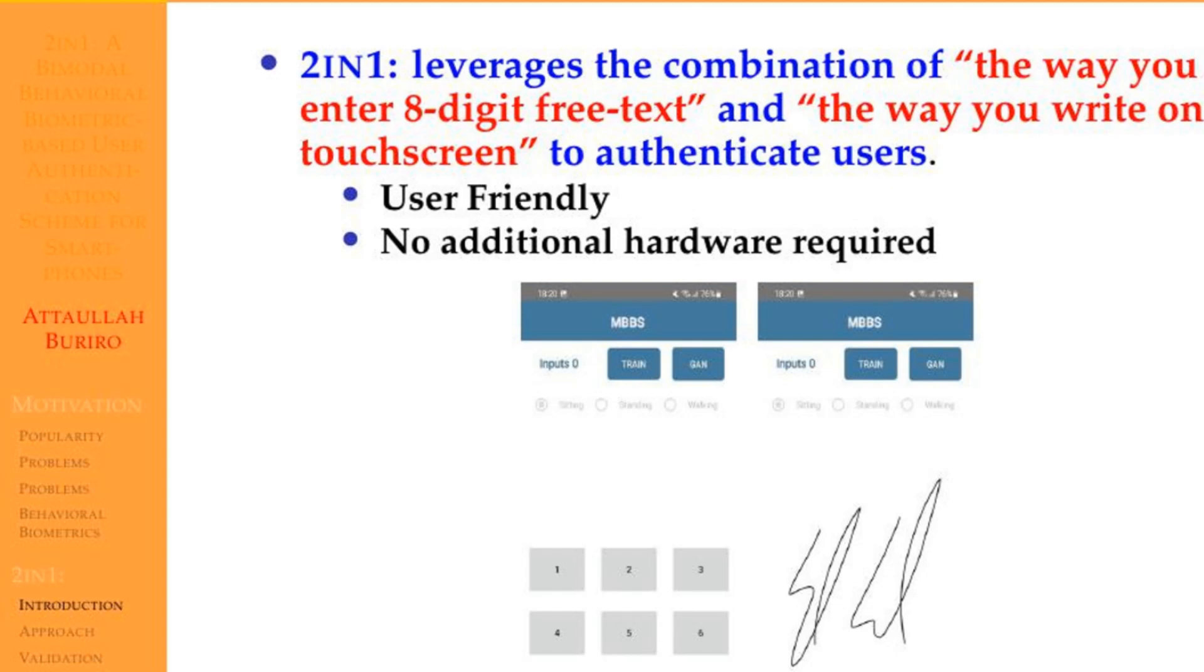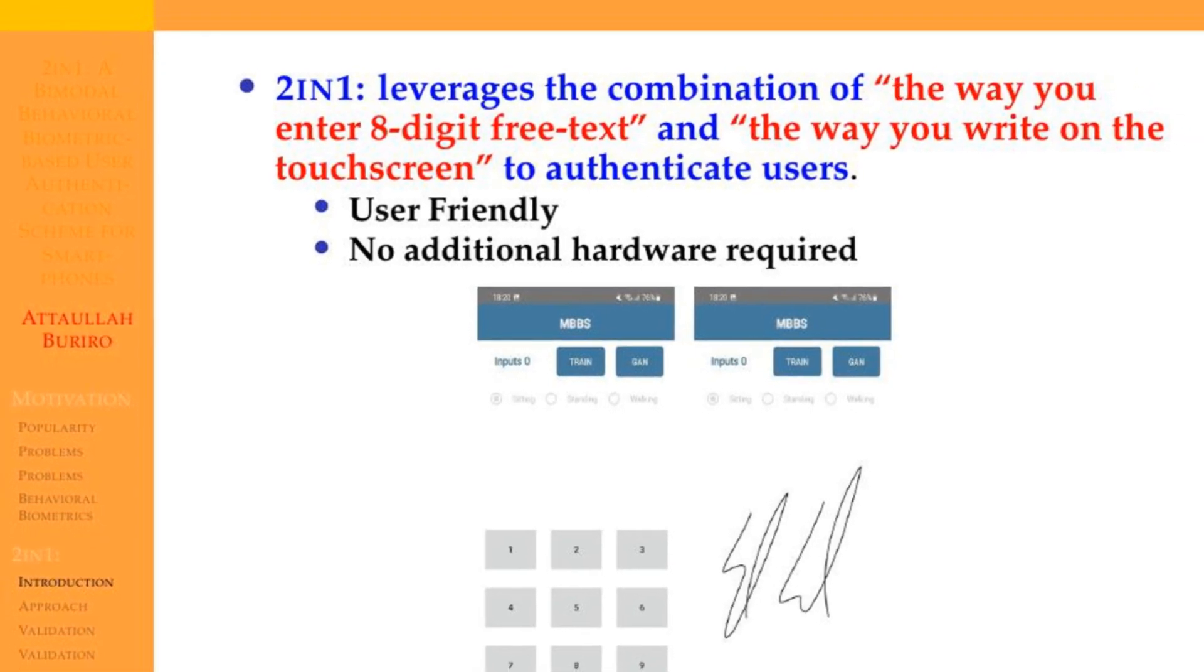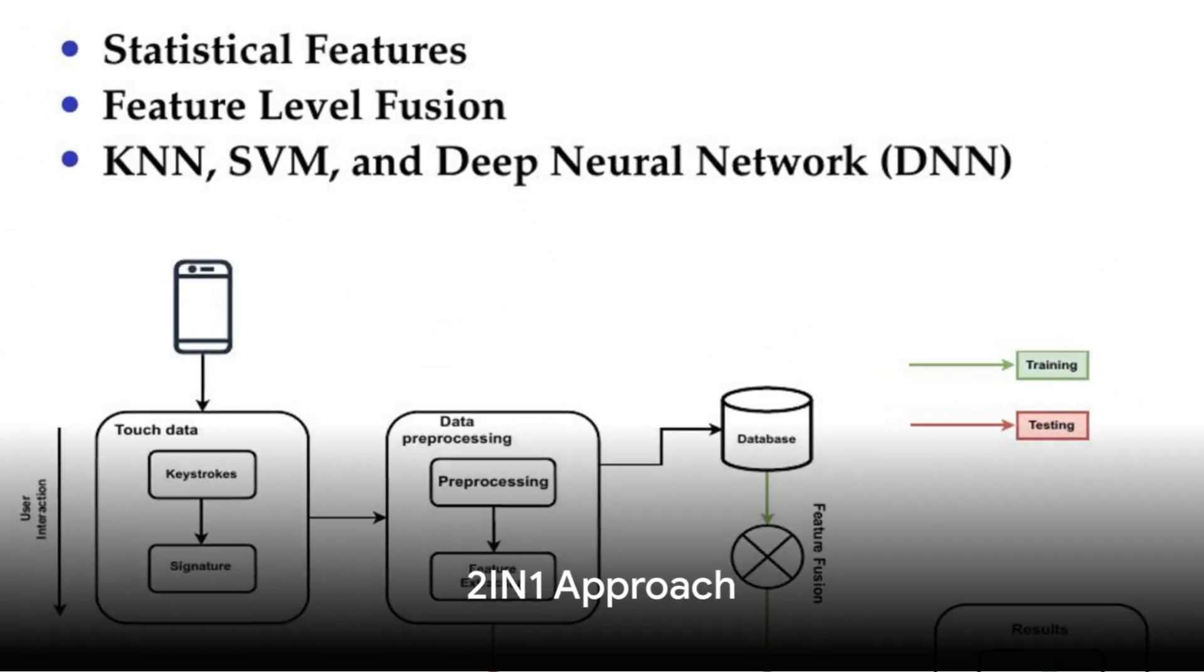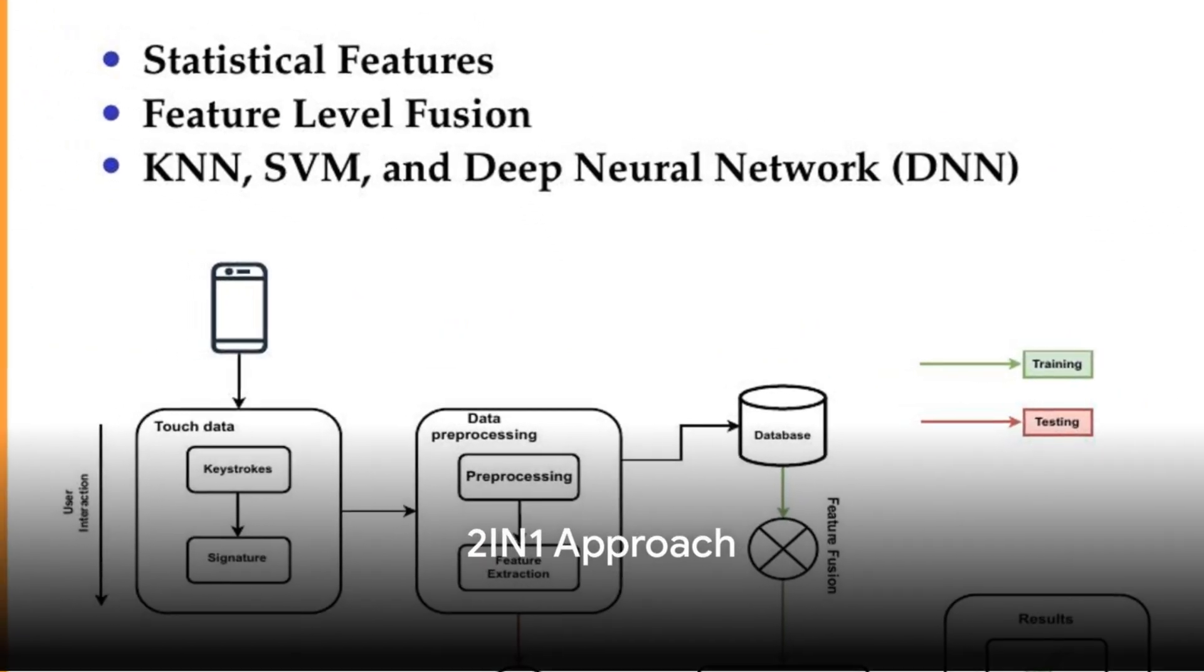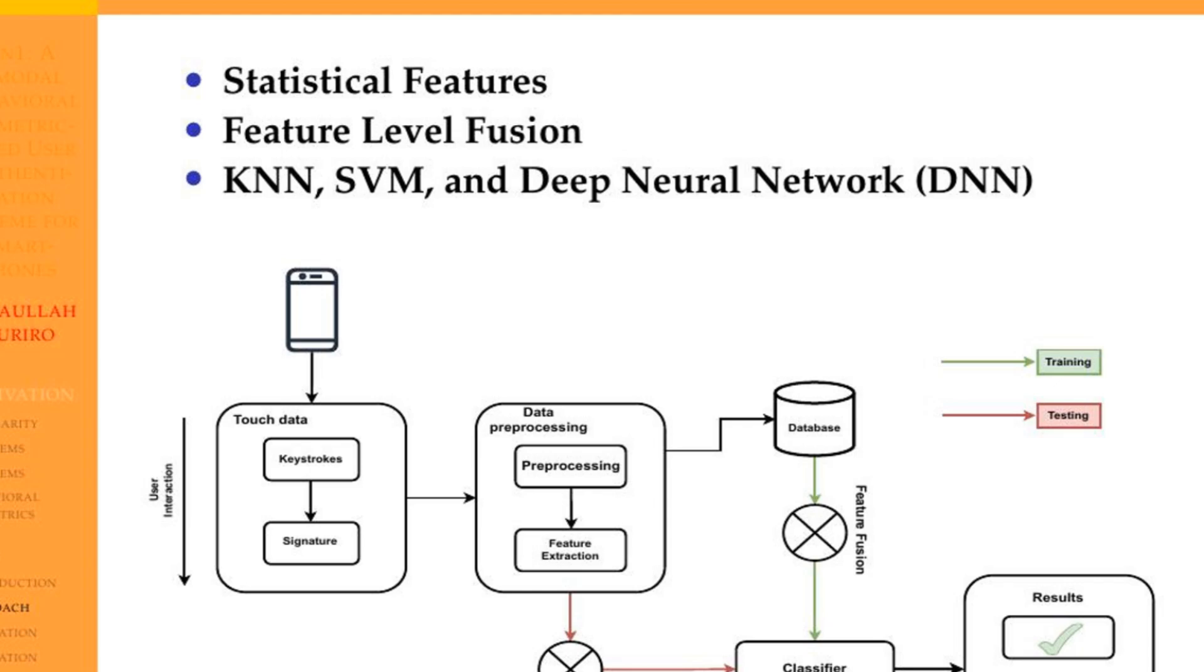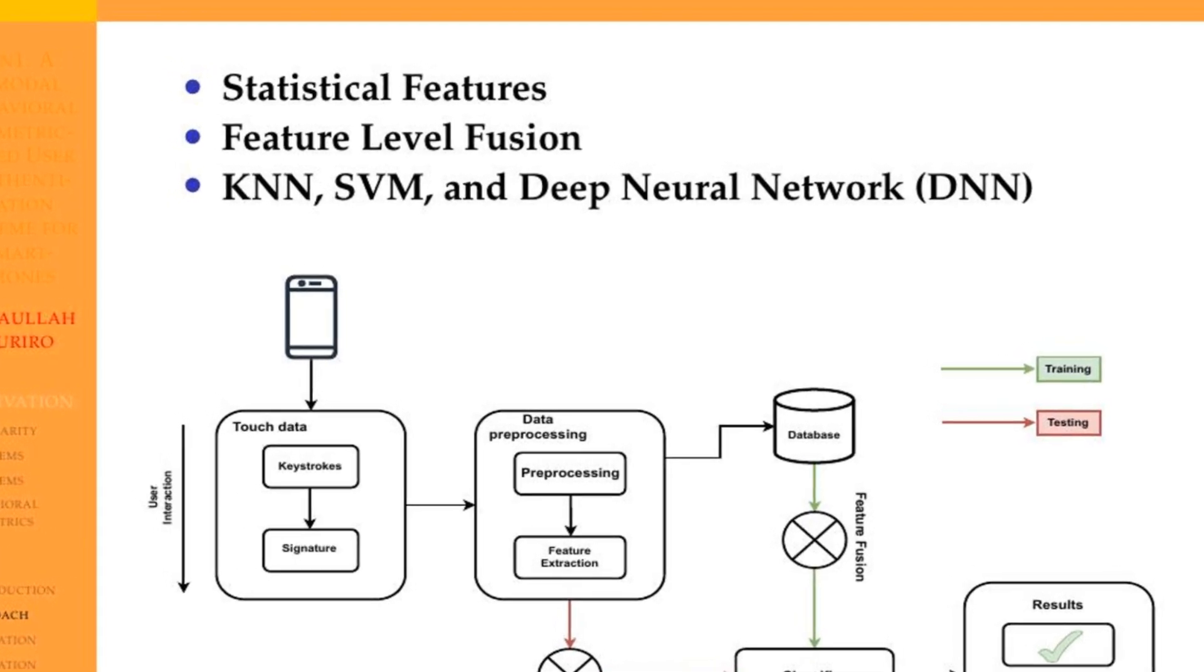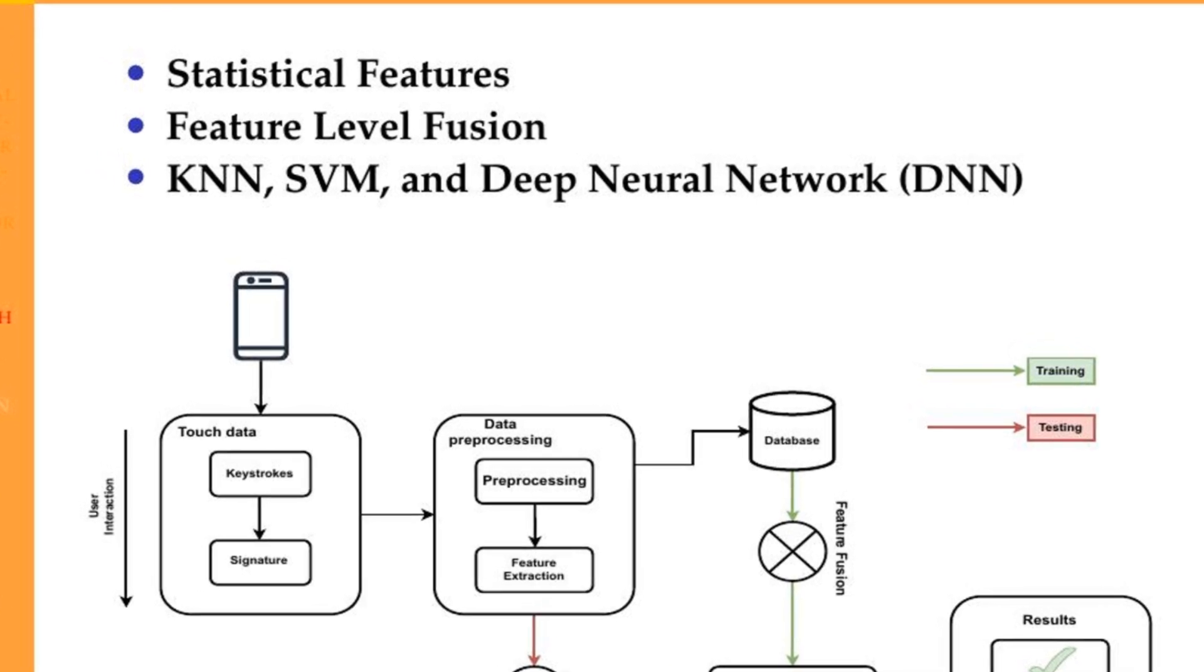Additionally, 2-in-1 is a user-friendly scheme as it does not require users to remember any secret. 2-in-1 leverages statistical timing-based features and applies feature-level fusion to obtain a final feature vector of the two combined modalities. The final feature vector obtained by combining touch typing and signature modalities is 63 features long.